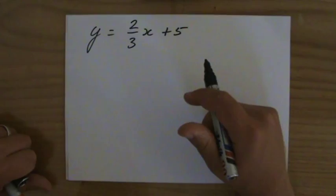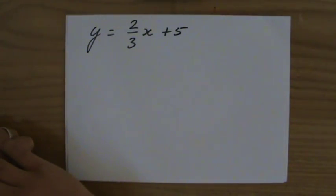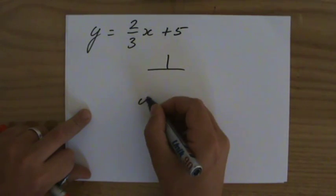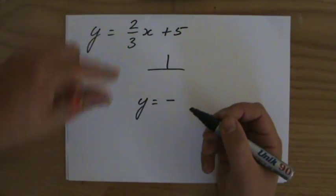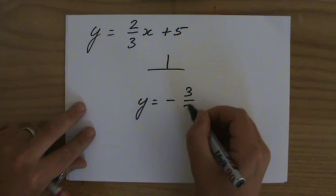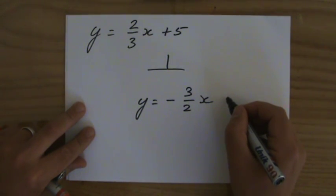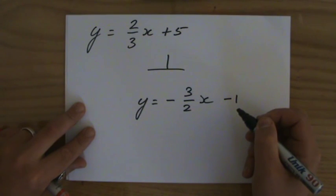Well, for instance, y equals the negative reciprocal, so 3 over 2x, and the y-intercept doesn't matter, I can say plus 5 again, but I can also say minus 1. So y equals minus 1 and a half x, 3 over 2, top heavy, turn that into a mixed number.